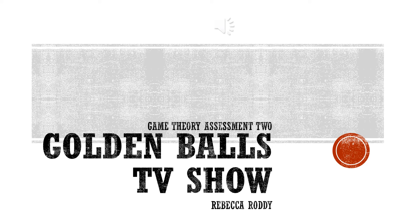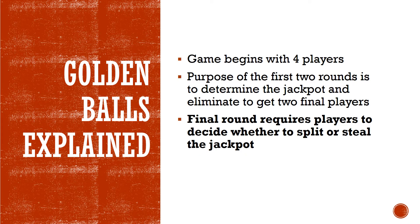The real life situation I have chosen is the final round of the TV show Golden Balls. In this final round, we have two players who have two choices: whether to split or steal the jackpot earned in previous rounds. If both players pick split, they split the jackpot. If only one picks steal and the other split, the player who picked steal takes the whole jackpot. And if both pick steal, the jackpot is lost to both players.